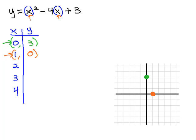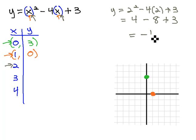Let's plug in our next value. Our next value is 2. So we replace each of the x's with 2. y equals 2 squared minus 4 times 2 plus 3. Well, 2 squared is 4, 4 times 2 is 8. So we have 4 minus 8 plus 3. 4 minus 8 plus 3 is negative 1. So when x is 2, y is negative 1. So we'll go 2 to the right, 1 down, and we get another point.